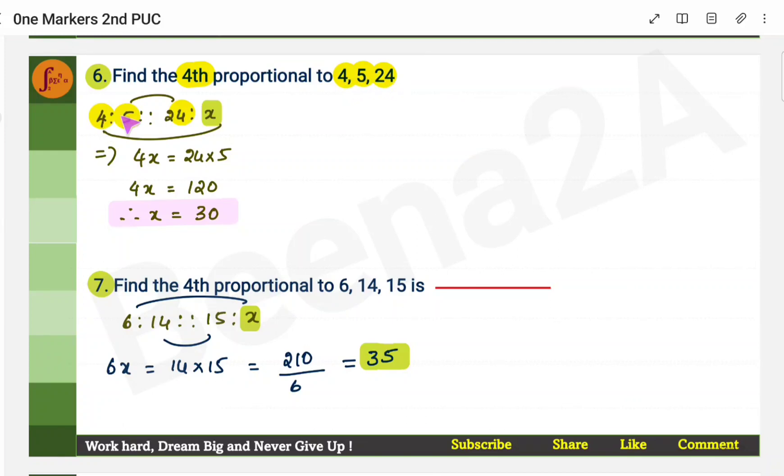So you'll get 4, 5, 24. In the fourth term you have to find. Here, another example, you have to find fourth term, 6, 14, 15. So multiply 14 into 15 and multiply 6 with x. 6x, thereby you'll find value of x.